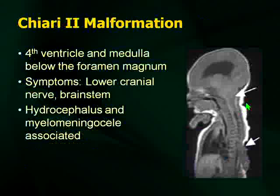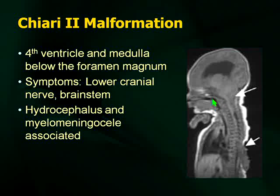Chiari 2 malformations: the 4th ventricle and medulla are below the foramen magnum. With Chiari 1 you have tonsillar herniation; with Chiari 2, as the numbers get bigger, the herniation gets lower. What's special about Chiari 2? The 4th ventricle is involved. As a result, you get hydrocephalus because of obstruction of the 4th ventricle. The symptoms are the same — lower cranial nerve and brainstem type symptoms — but the important associated symptom is hydrocephalus.